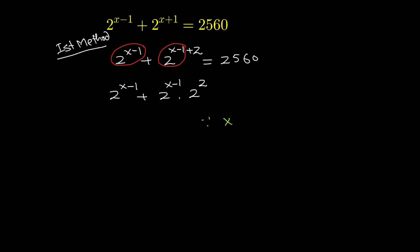There is a very strong property of exponents: x raised to the power a plus b can be written as x raised to the power a, times x raised to the power b — you can just break the exponent. So this is equal to 2560.